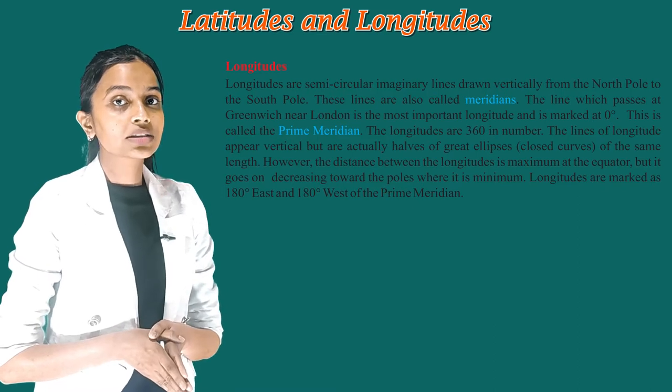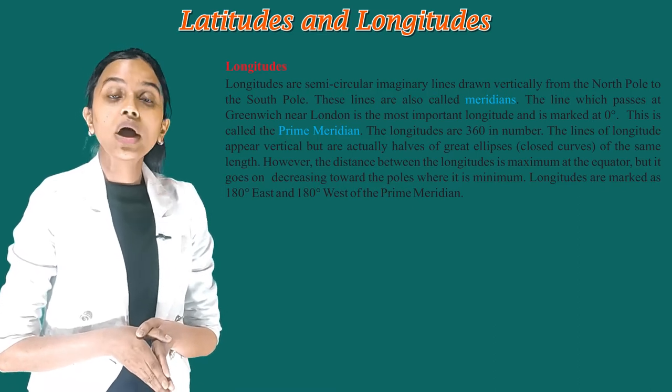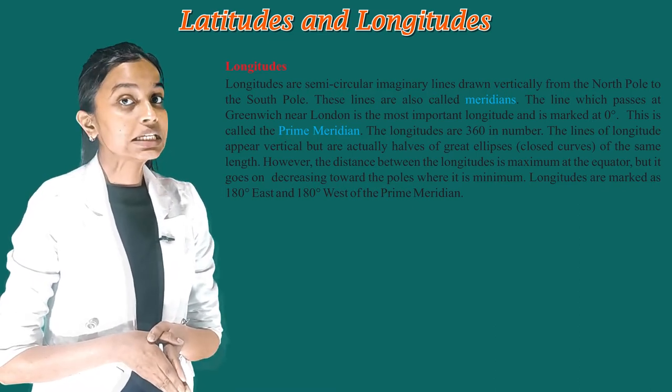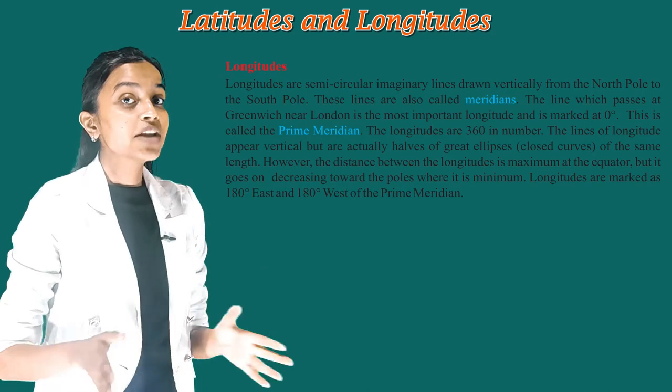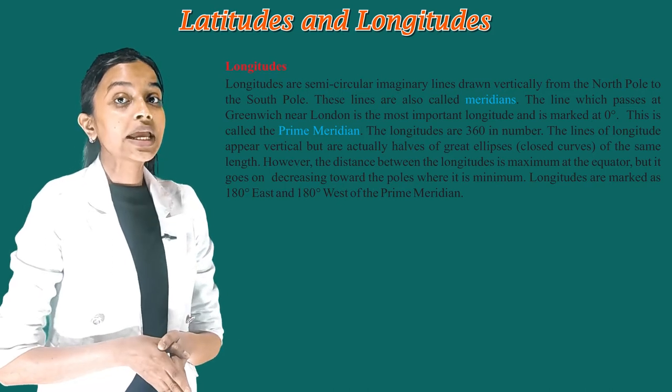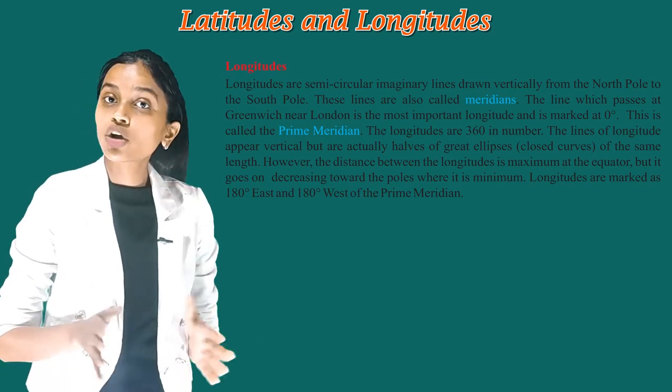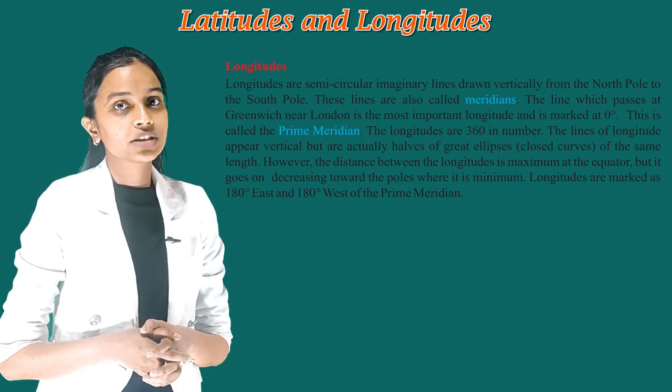Longitudes are marked as 180 degrees east and 180 degrees west of the prime meridian.